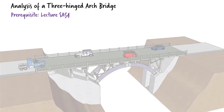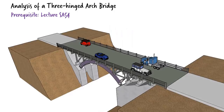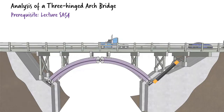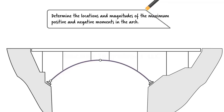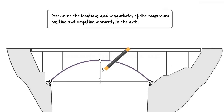This is a continuation of lecture SA54, in which we presented a method for analyzing three-hinged arches. In this lecture, we expand our previous discussion by showing how one can go about determining the maximum bending moment in an arch due to moving loads. Suppose we are asked to determine the locations and magnitudes of the absolute maximum positive and maximum negative moments in this three-hinged arch.